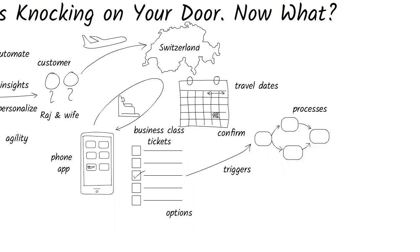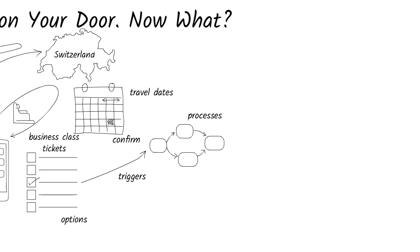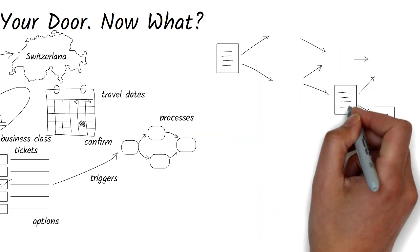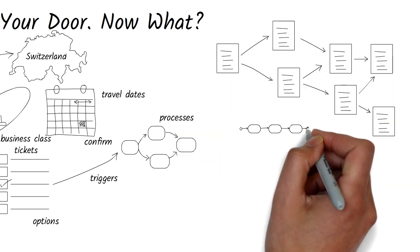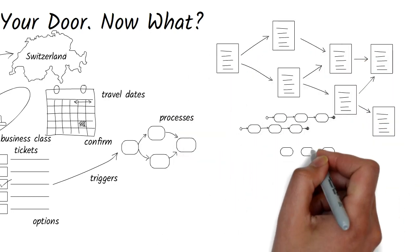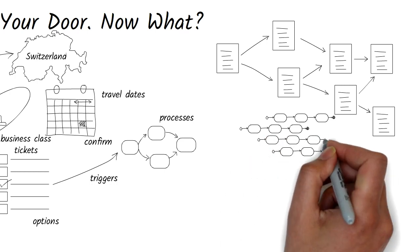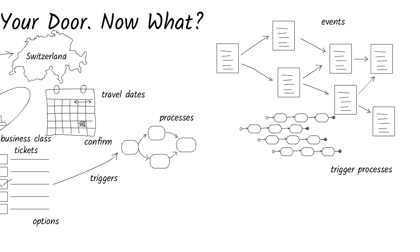That purchase event triggers a series of backend business processes to be kicked off. Imagine an event as a virtual sheet of paper with information on it. Single events can be split into multiple events, and multiple events can be combined into a single event. These events trigger business processes as they go through the system.